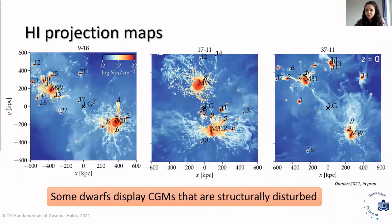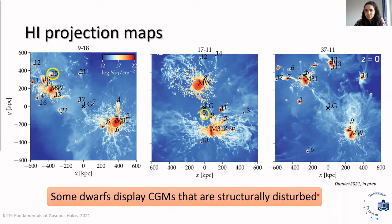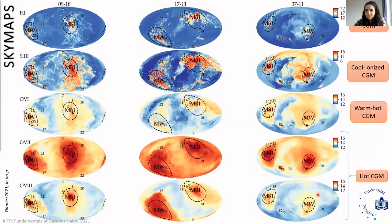These are face-on HI column density distribution maps for each realization centered on the local group center. We also have a host of satellites surrounding the Milky Way and M31. It is interesting to see that there are quite a few examples of satellites, enclosed in yellow circles, showing structurally disturbed CGMs.